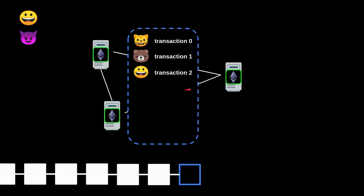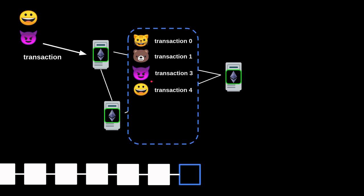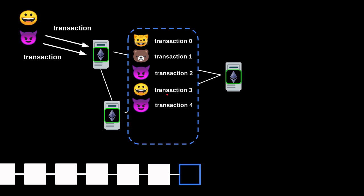Now because the mempool is public, anyone can see all of the pending transactions inside it. A bad actor, Eve, can look at all of the pending transactions and try to submit her transaction in the same block to exploit Alice's transaction. For example, Eve can try to submit her transaction before Alice's to make some profit — this is called a front run. Or there might be a transaction where Eve submits right after Alice to make some profit — this is called a back run. And maybe it makes sense for Eve to submit a transaction both before and after Alice's. This is called a sandwich attack.